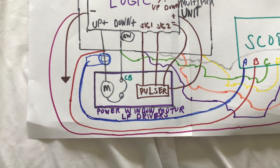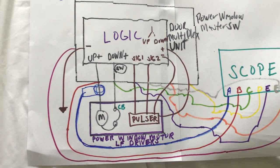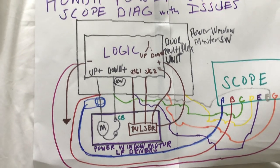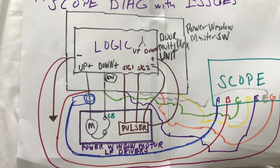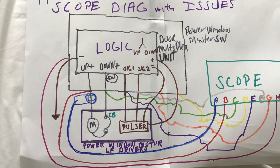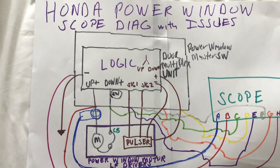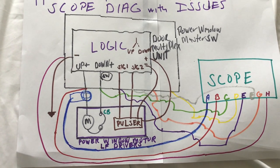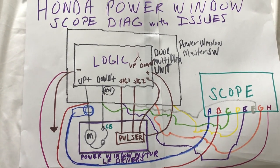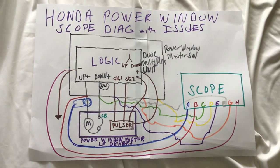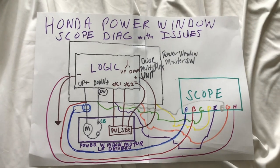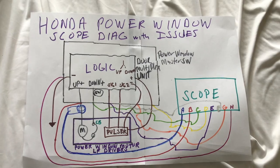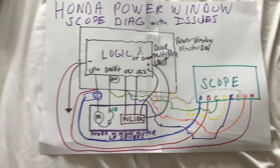Also involved is something called a pulser, part of the power window assembly. The best comparison is a dual crank position sensor — just as a crankshaft rotates and gives a crank signal, when the power window motor moves up or down the pulser sends two signals to the door multiplex unit. You'll see them on the scope pattern. They validate when the window stops moving. This is also a one-touch assembly, which has to be learned — you touch the switch once and the window continues to move up or down.